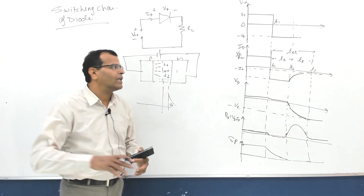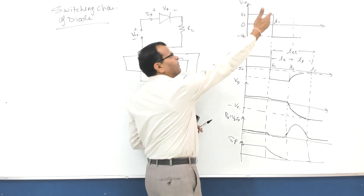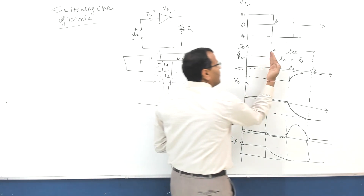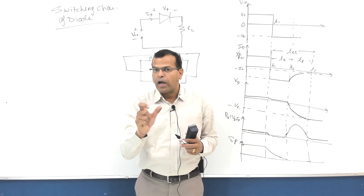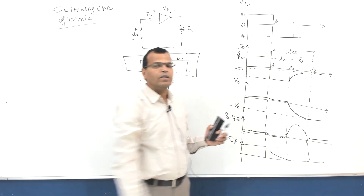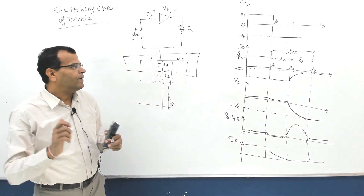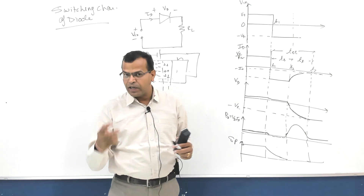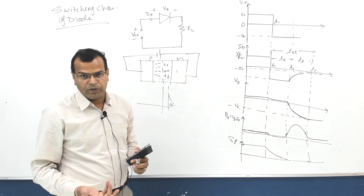Please understand the meaning of reverse recovery time. After changing the supply voltage, the current does not suddenly become the reverse saturation current - it takes time from the switching instant to reach that level. Reverse recovery time is the total time required to reduce the current to the reverse saturation current after applying negative voltage across the diode. The concept is important even if there may not be direct exam questions on it.